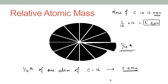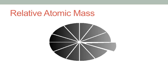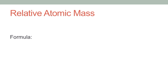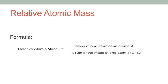This standard — 1 AMU — is going to be used in the calculation of relative atomic mass, relative isotopic mass, relative molecular mass, and relative formula mass. The formula for relative atomic mass is: relative atomic mass equals the mass of one atom of an element divided by one twelfth of the mass of one atom of C12, which is 1 AMU.